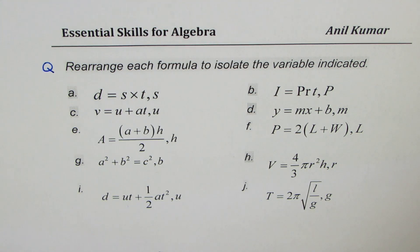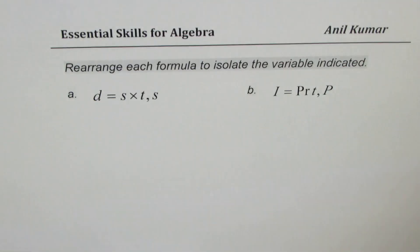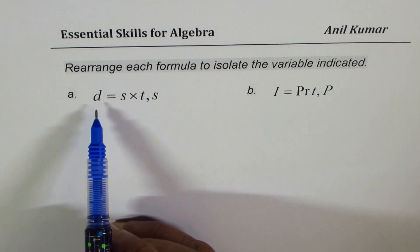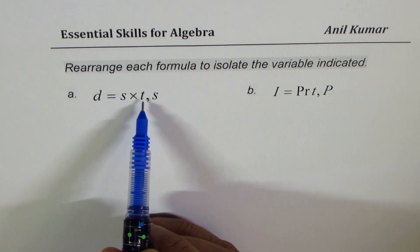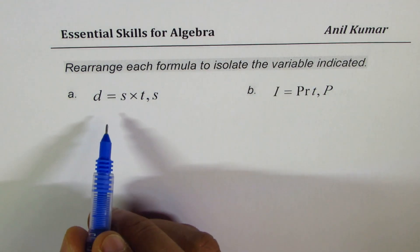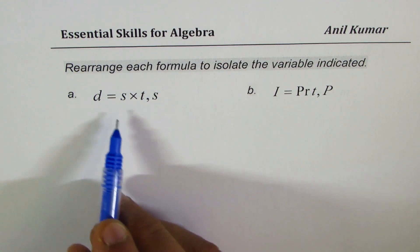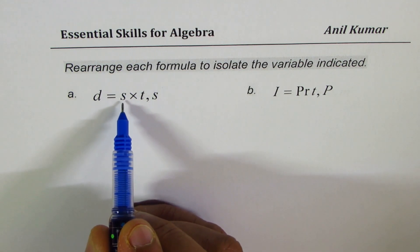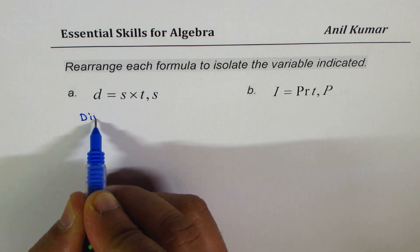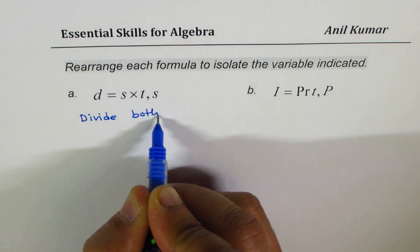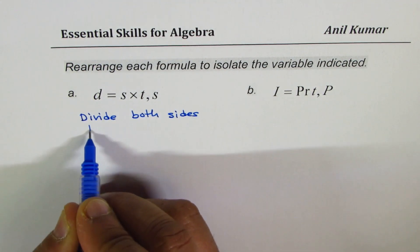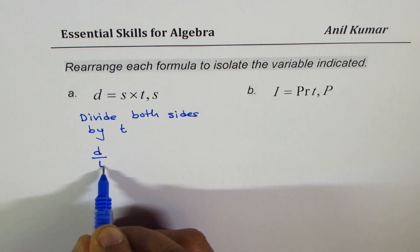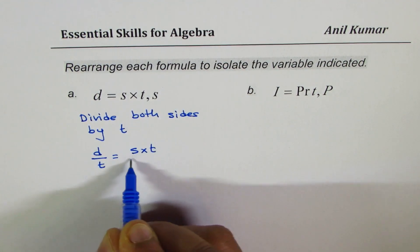By solving, I really mean isolating the required variable. The first one is d = s × t — distance equals speed times time. What is speed? To isolate s, we will divide both sides by t, since we want to know what s is. So the first step is to divide both sides by t, since we want only s. It becomes d/t = s × t/t.